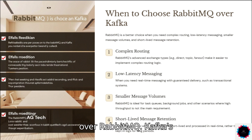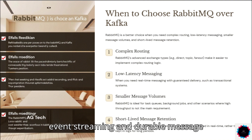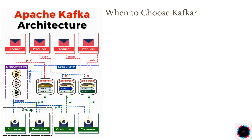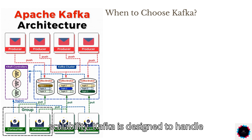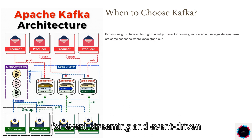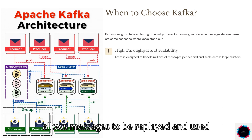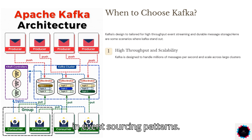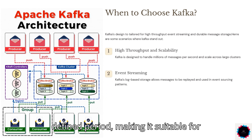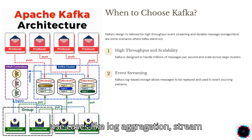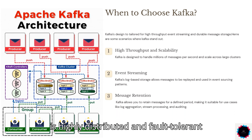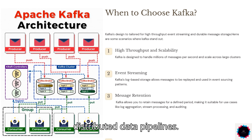When to choose Kafka over RabbitMQ? Kafka's design is tailored for high-throughput event streaming and durable message storage. 1. For high-throughput and scalability – Kafka is designed to handle millions of messages per second and scale across large clusters. 2. For event streaming and event-driven architecture – Kafka's log-based storage allows messages to be replayed and used in event sourcing patterns. 3. When message retention matters – Kafka allows you to retain messages for a defined period, making it suitable for log aggregation, stream processing, and auditing. 4. For distributed systems – Kafka is highly distributed and fault-tolerant by design, making it ideal for distributed data pipelines.